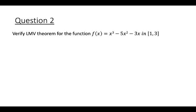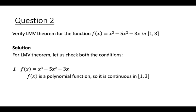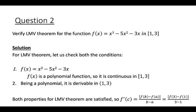Let me discuss one question of Lagrange's mean value theorem. Verify LMVT for the function f(x) = x³ − 5x² − 3x in the closed interval [1, 3]. Checking the two conditions: f(x) is a polynomial function, so it is continuous in [1, 3] and derivable in the open interval (1, 3). As both conditions are satisfied, we can apply the result f'(c) = [f(b) − f(a)] / (b − a).